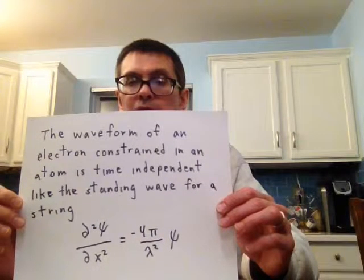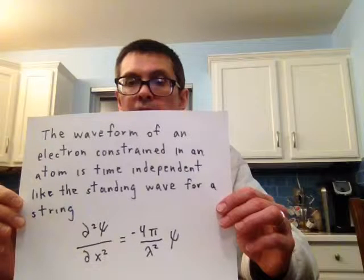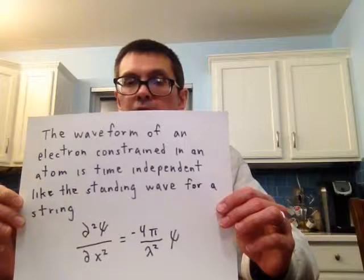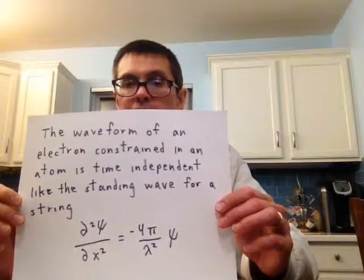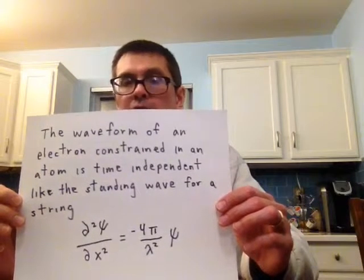And you get Schrodinger's wave equation that's independent of time, where psi is the waveform. So now you're only varying spatially. You can vary spatially in one dimension like a wave on a rope, but an electron is three-dimensional.